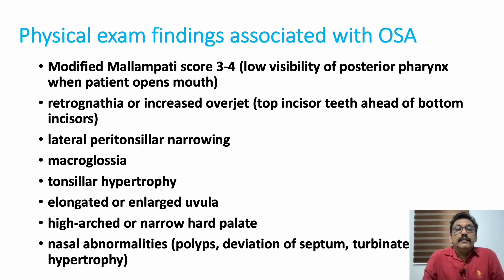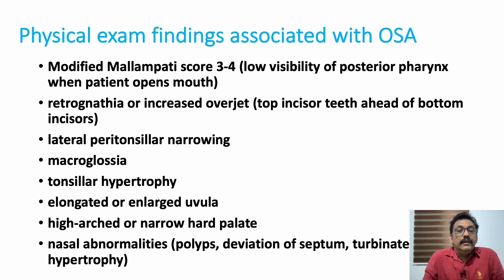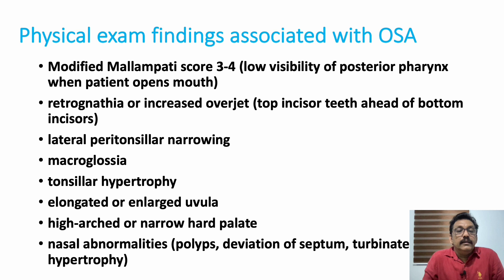Physical examination in the emergency room or OPD includes the modified Mallampati score — class 3 to 4 indicates low visibility of the posterior pharynx when the patient opens the mouth. Other findings include retrognathia, increased overjet with top incisors ahead of bottom incisors, lateral peritonsil narrowing, macroglossia, tonsillar enlargement, elongated or enlarged uvula, high arched or narrow hard palate, and nasal abnormalities like polyps, deviated nasal septum, or turbinate hypertrophy. All patients suspected of OSA should undergo detailed ENT evaluation before making a proper diagnosis.